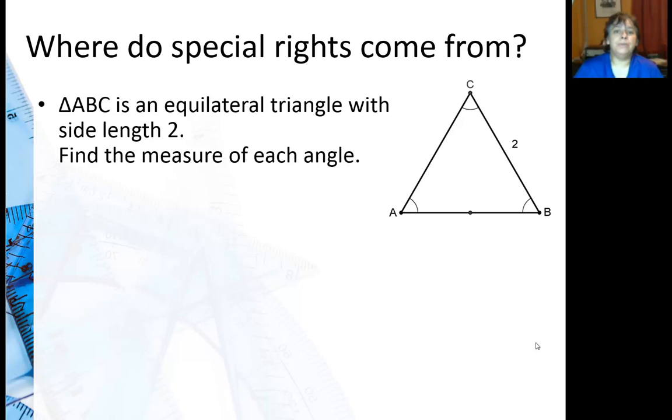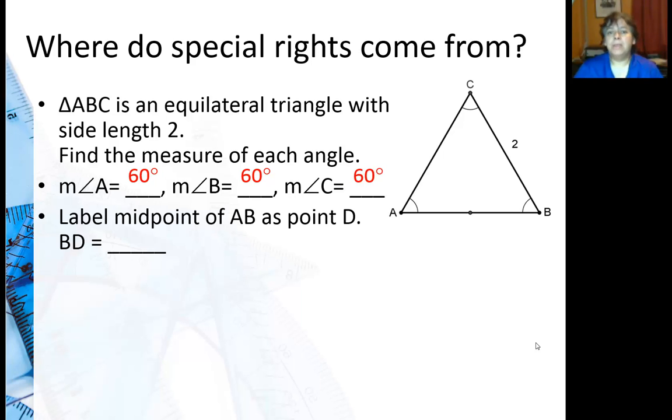We should find the measure of each angle. Well it's an equilateral triangle so each of the angles is 60 degrees. Then I want you to label the midpoint of AB as point D. How long is BD this piece right here? Well it should be half of the side which is 1, so BD is 1.